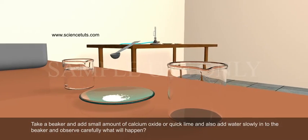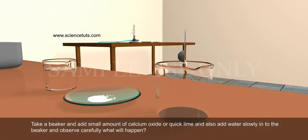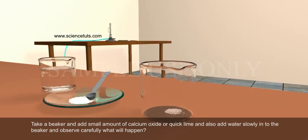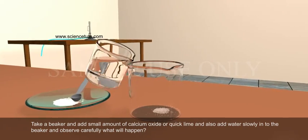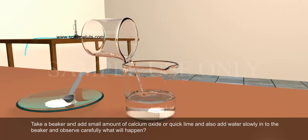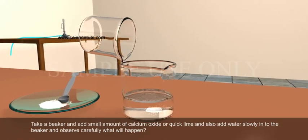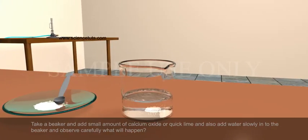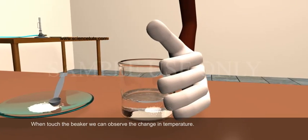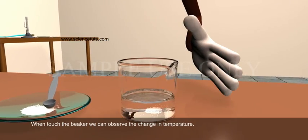Take a beaker and add small amount of calcium oxide, a quick lime, and also add water slowly into the beaker and observe carefully what will happen. When touched the beaker, we can observe the change in temperature.